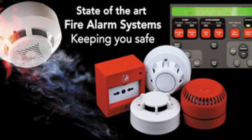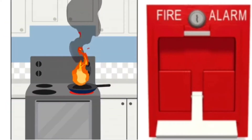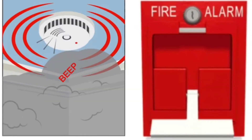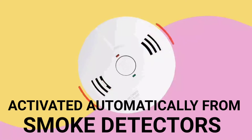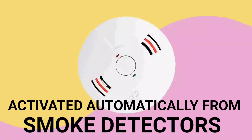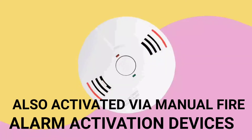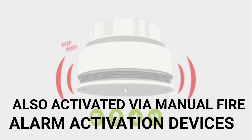A fire alarm system warns people when smoke, fire, carbon monoxide, or other fire-related emergencies are detected. These alarms may be activated automatically from smoke detectors and heat detectors, or may also be activated via manual fire alarm activation devices such as manual call points or pull stations.